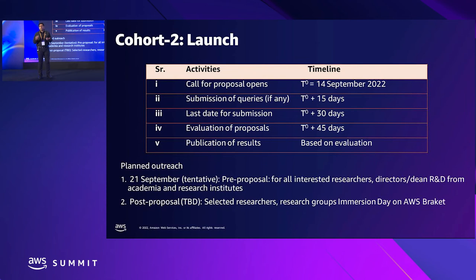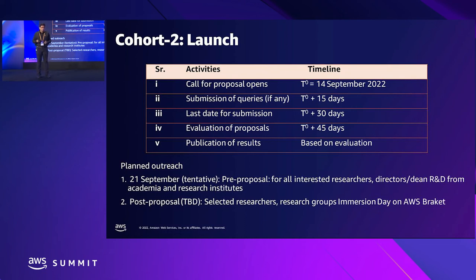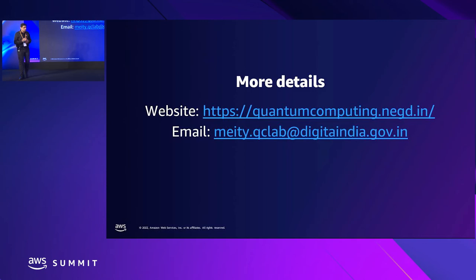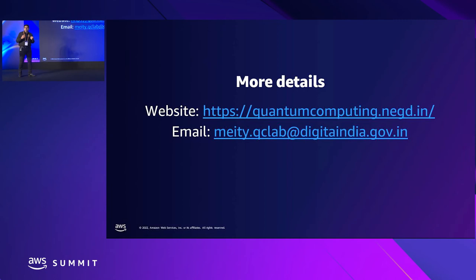AWS provides research credits and makes cloud resources available. The process: download the call for proposals — there is a format specifying what is expected and how to estimate. Submit your proposal; queries can be submitted for 15 days from the submission opening. Evaluation takes up to 45 days, and then shortlisted projects are announced and given credits — essentially the same process as Cohort 1. The NEGD website has all the details; for queries, write to meity.qclab@digitalindia.gov.in.